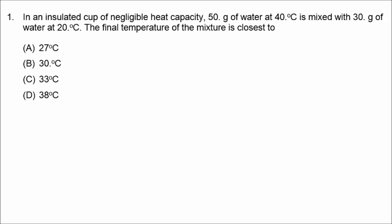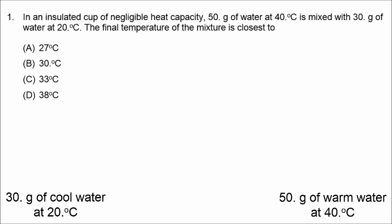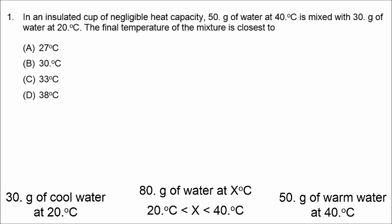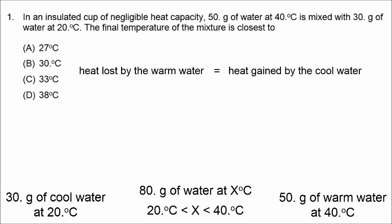In this problem, we have 50 grams of warm water at 40 degrees Celsius, and we're mixing it with 30 grams of water at 20 degrees Celsius. The final temperature of this mixture is going to be somewhere in between 20 and 40 degrees Celsius. The heat lost by the warm water is equal to the heat gained by the cool water.